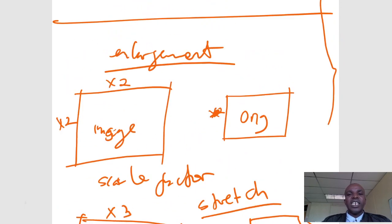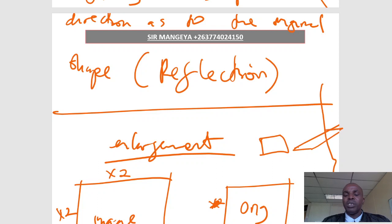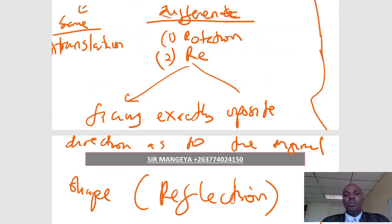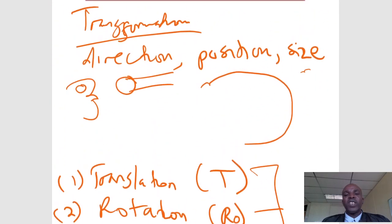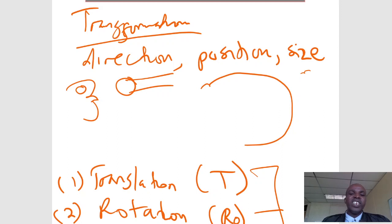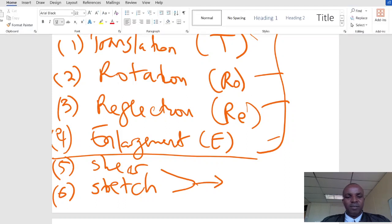A shear is a bit easier to identify. The original shape is upright, but the image appears as if one side has been pulled or leaned over — it looks taller on one side. That's called a shear. I hope you've understood the different types of transformations. Check the other videos for each type explained one by one. Thank you — signing out.